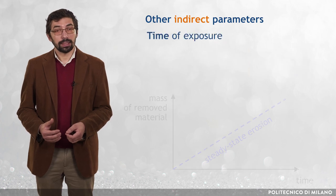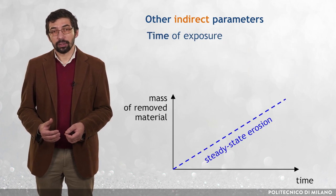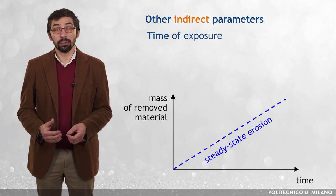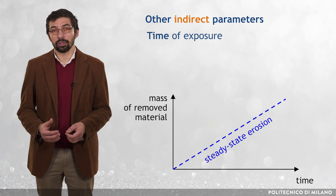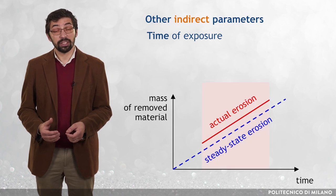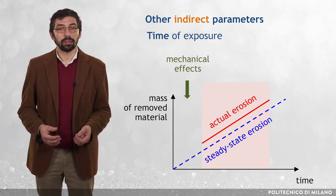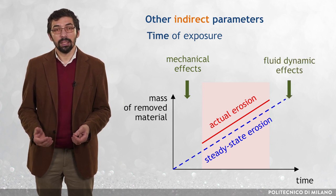Regarding the effect of time, steady-state erosion is characterized by a linear increase in mass loss. Steady-state erosion is a good approximation of the actual erosion process only within a certain time interval. Departure from the steady-state condition occurs because of two effects: at low testing times, because of changes in the mechanical properties of the target material after the first impingement; at high testing times, because the eroding surface changes the fluid dynamic characteristics of the particle-laden flow, and therefore affects the subsequent evolution of the erosion process.